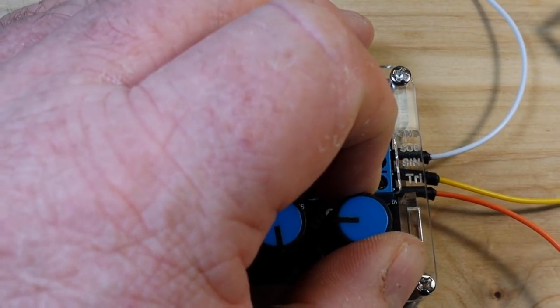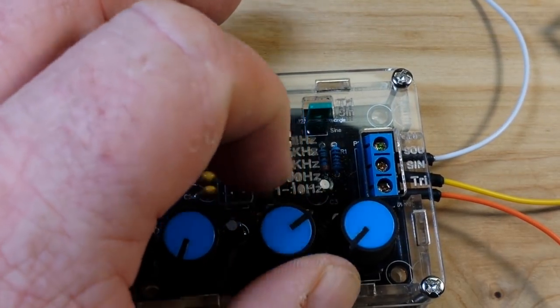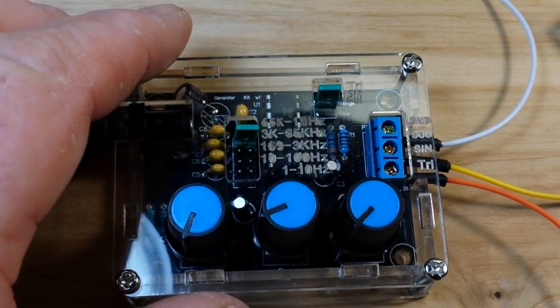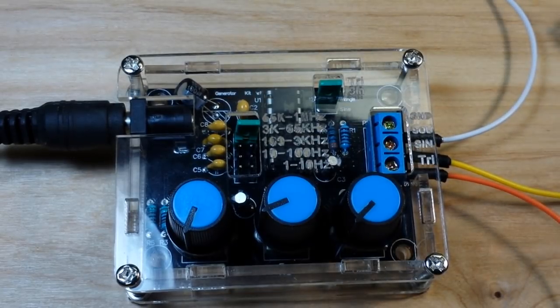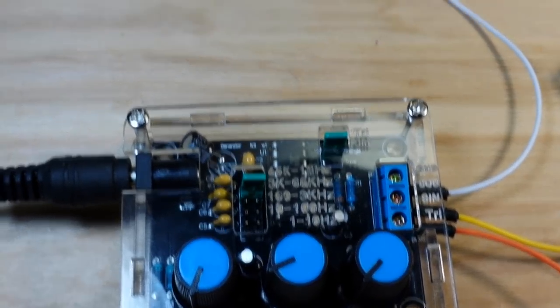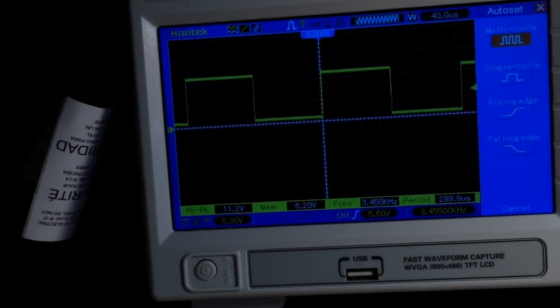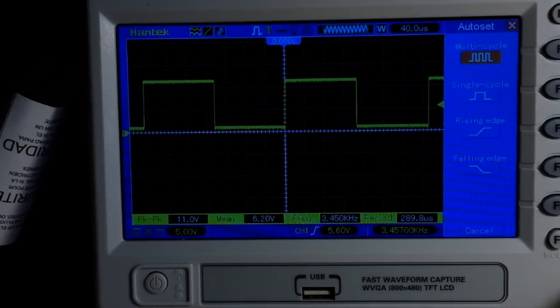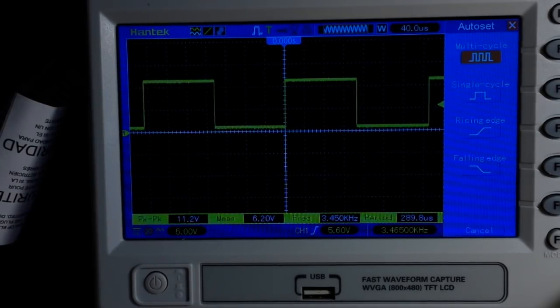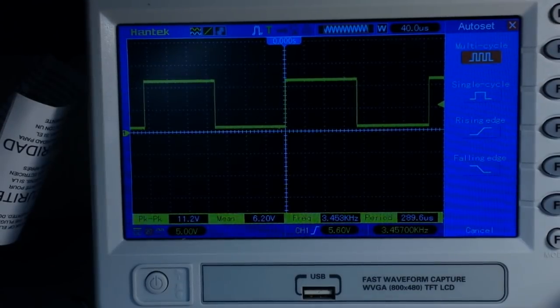Turn the coarse knob all the way down and the fine knob all the way down, and we're getting 3.457 kilohertz. Looking pretty good there, the waves are very square, very little jitter.